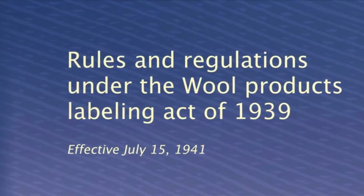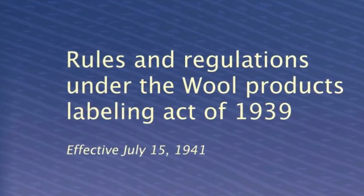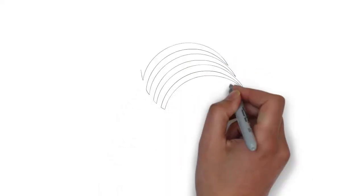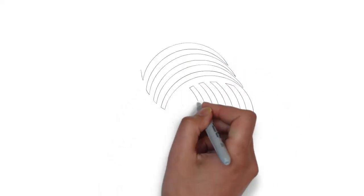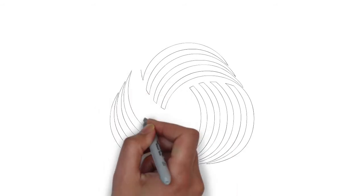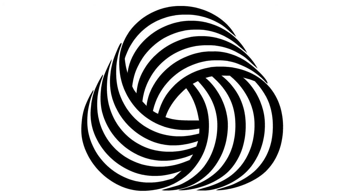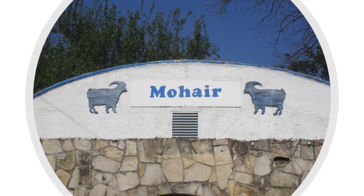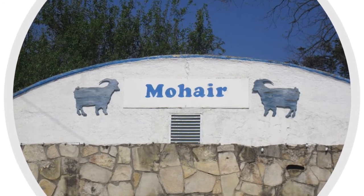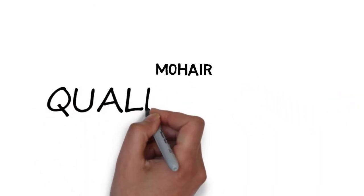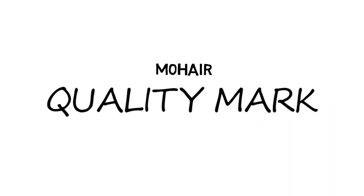The wool mark is an internationally recognized registered trademark to identify products that are made from pure new wool which also meet strict performance criteria. The mohair mark has been developed to help consumers select products that contain only the highest quality natural mohair fiber. Can you find a picture of the mohair mark in your work environment?